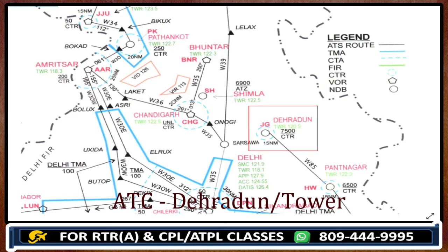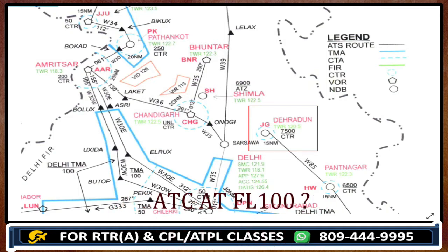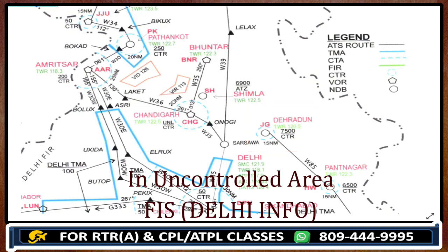What would be the ATC at flight level 1-0-0? Now we are outside the boundary and limit of Dehradun Tower. All the rules of an uncontrolled area will be applicable. If FIS is given, we will call Delhi Info, as this is within Delhi FIR.